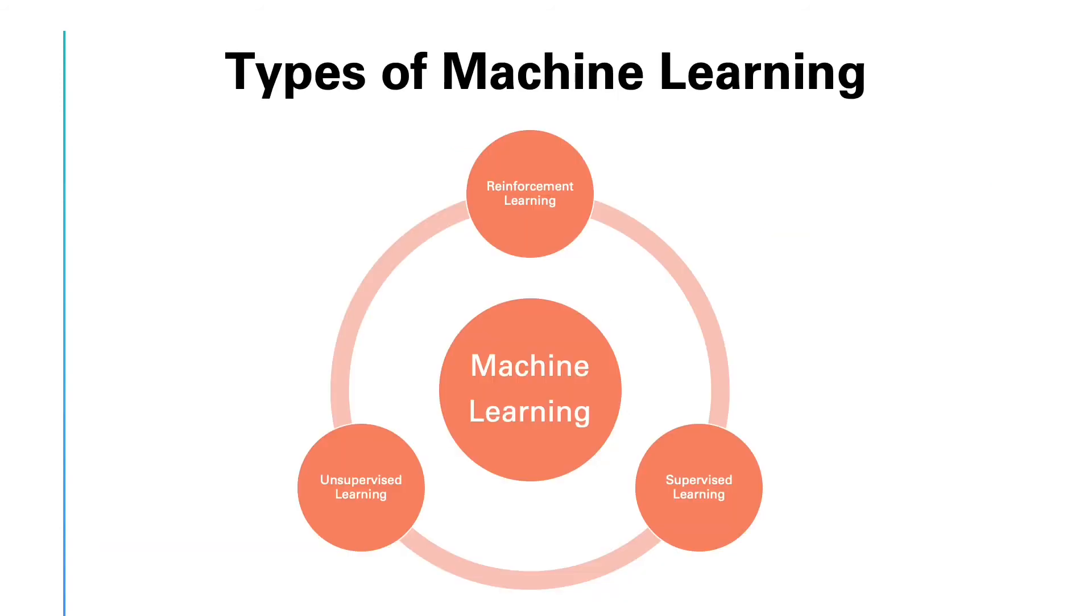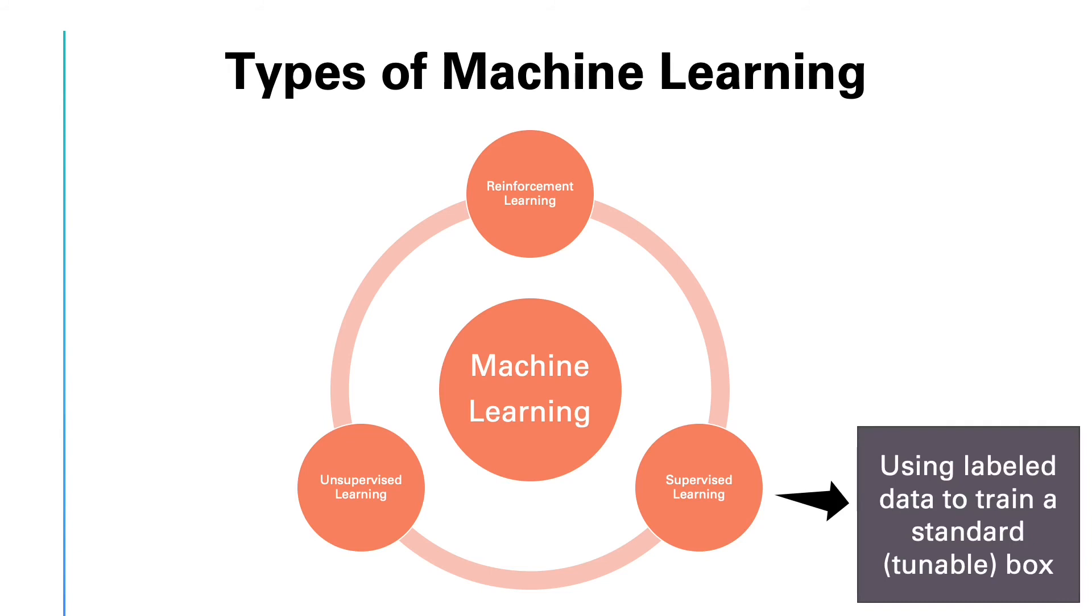Now, let's talk a little bit about machine learning approaches in general. We can categorize machine learning into three different types: supervised learning, that we have discussed so far, unsupervised learning, and finally, reinforcement learning. Supervised learning is a type we have already discussed in detail, where the idea is that using labeled data, we train a standard tunable function to perform the task we wanted to do.